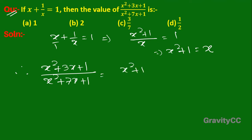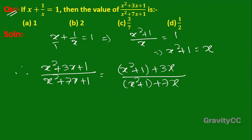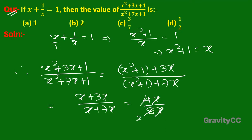This gives us x squared plus 1 plus 3x upon x squared plus 1 plus 7x, which equals x plus 3x upon x plus 7x, so 4x upon 8x. The x cancels, giving 4 upon 8, which is 1 upon 2. So the answer is 1/2 and option D is correct.